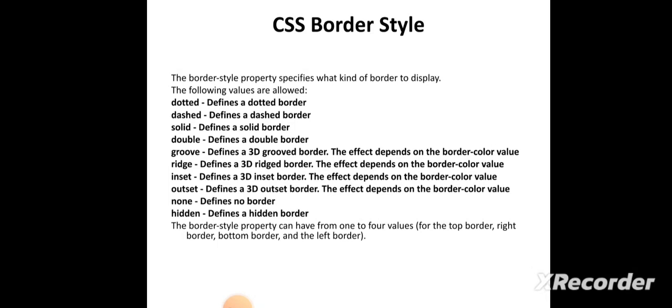The next one is how to include border style. Different border styles are used: dotted border, dashed border, and solid border. These border values can be used for a single heading, single paragraph, or the entire whole document. The property is border-style. We can use any type of border — dot, dashed, or solid.